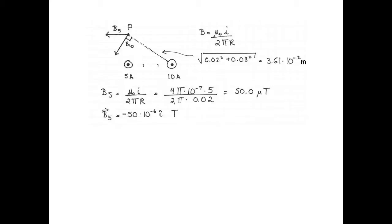Writing that magnetic field as a vector, we get minus 50 times 10 to the negative 6 i hat tesla.